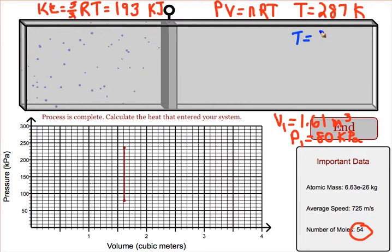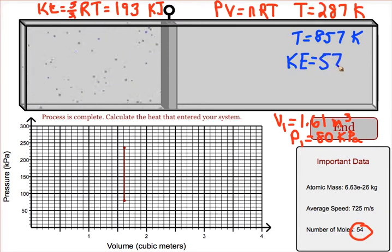That will come out to be about 857 Kelvin and the new kinetic energy. Remember to use the formula for the kinetic energy for a mole of average particles, and we get 577 kilojoules. That is the amount of kilojoules that the particles contain after the heat has been added.